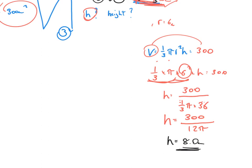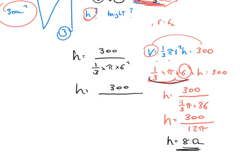Let's go over what I did there. I brought the one third pi times 6 squared down and divided. I could have left it as 300 over one third times pi times 6 squared and let the calculator do the rest — that would have been fine. But it's good practice to evaluate and simplify: 6 squared is 36, and 36 divided by 3 is 12, which is where the 12 pi came from.